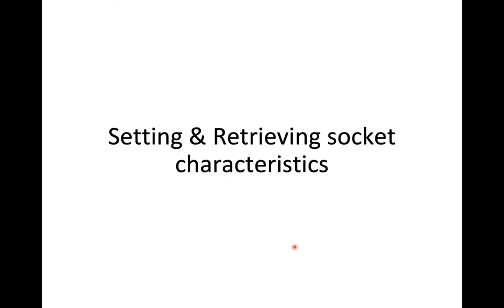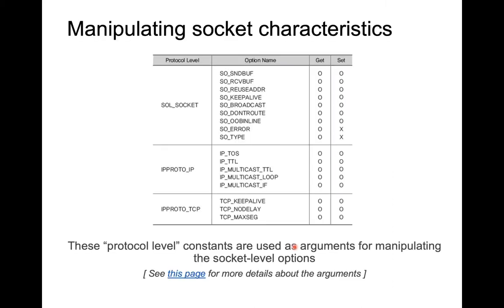So far we studied how to create a socket, then we studied various types of TCP and UDP sockets, and we also saw some examples such as the echo TCP and echo UDP. Today's lab we are going to see how to set some parameters inside the socket or retrieve something from it. We have some protocol options we can change at the socket level, IP level, or TCP level.